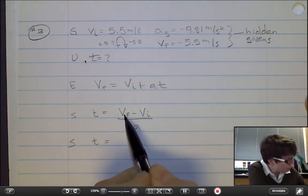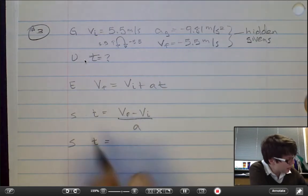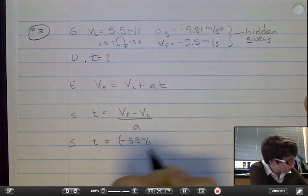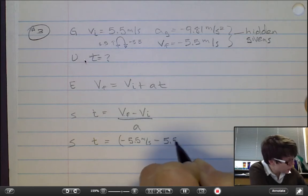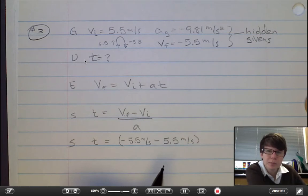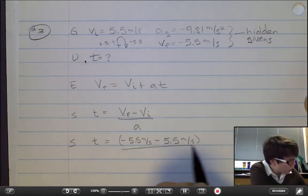The final velocity is a negative number. The initial velocity is positive. But note the subtraction sign here. All over negative.